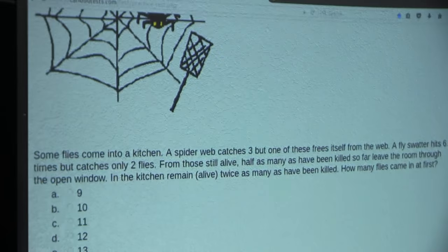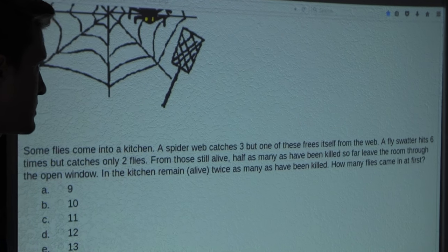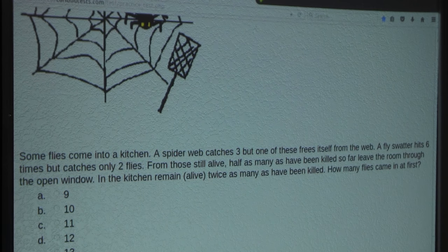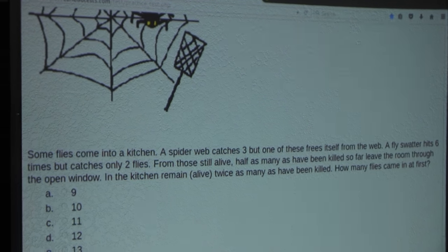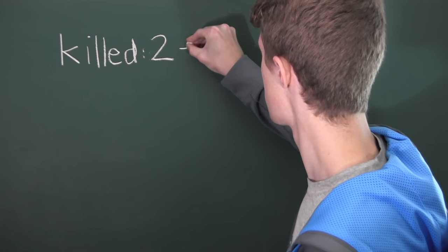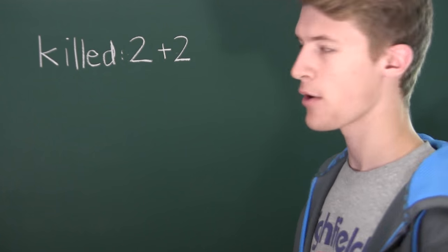Now let's move on. The next sentence says a fly swatter hits six times, but catches only two flies. So we know another two flies have been killed. So we will add this to the two we already have.